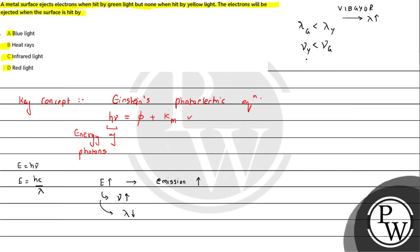Compared to yellow, red color has even lower frequency, so photoelectron emission for red color is less than for yellow. We can discard red. The infrared region has frequency even less than red color, so infrared can also be discarded.